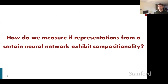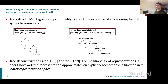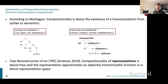This raises two questions: are neural representations compositional, and if so, do they generalize systematically? To measure compositionality, we use Montague's definition — compositionality is about the existence of a homomorphism from syntax to semantics. For example, 'Lisa does not skateboard' has a syntax tree, and the meaning is composed according to that structure: meaning of 'Lisa does not skateboard' is a function of 'Lisa' and 'does not skateboard,' and so on.